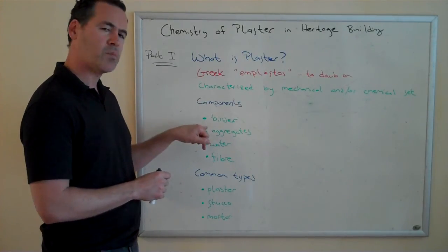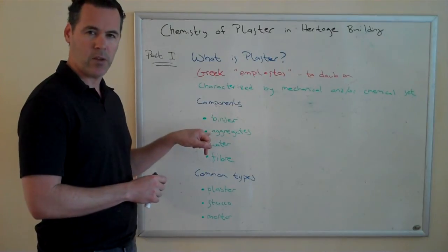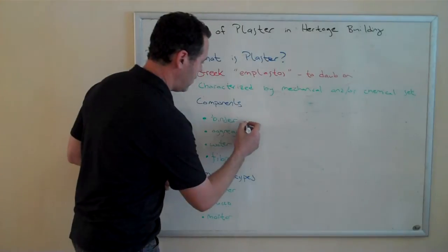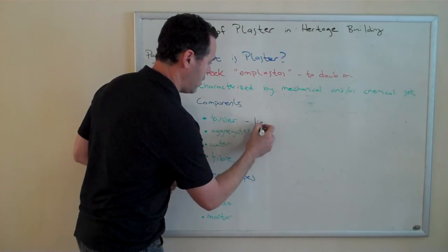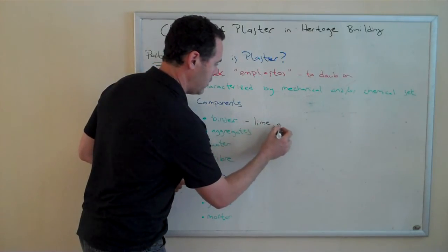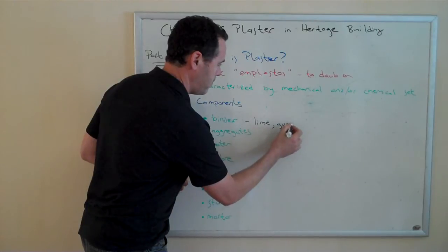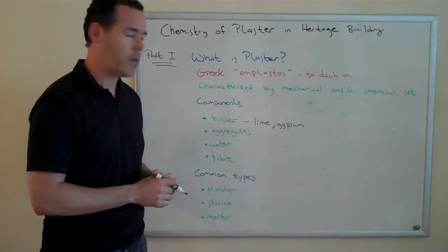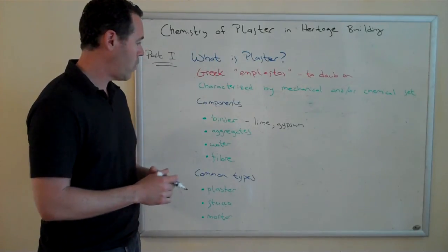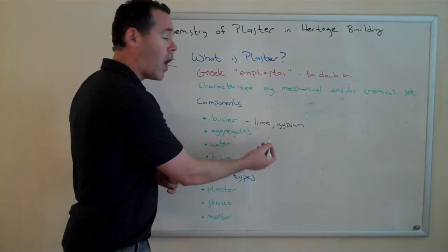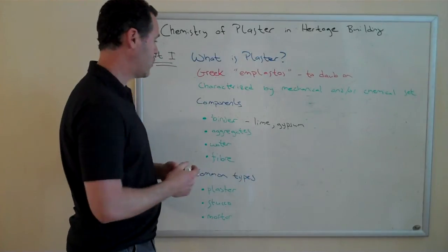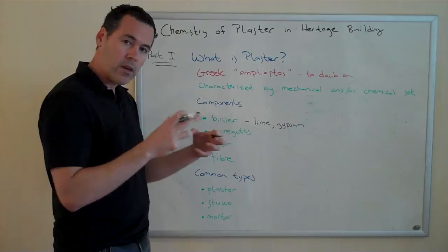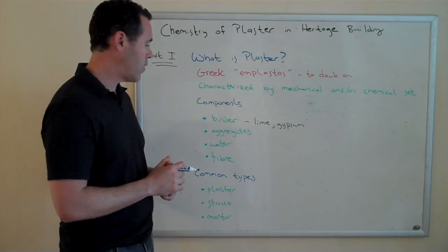There is always a binder. Most plasters are named by their binder. For example, some of the binders are lime and gypsum. There are a few other heritage binders that we'll be talking about in our next video. Commonly you'll hear the expressions 'a lime plaster' or 'a gypsum plaster.' Most plasters are known by the binder — the component that holds all of the aggregates and other materials together.